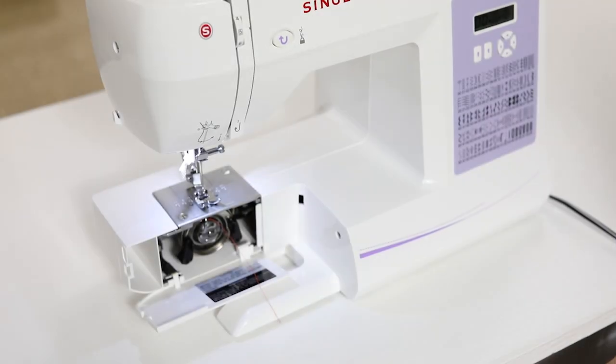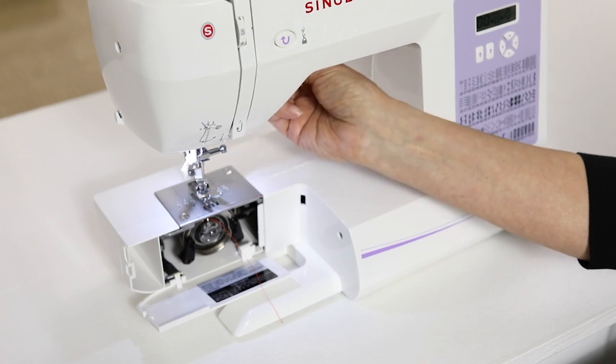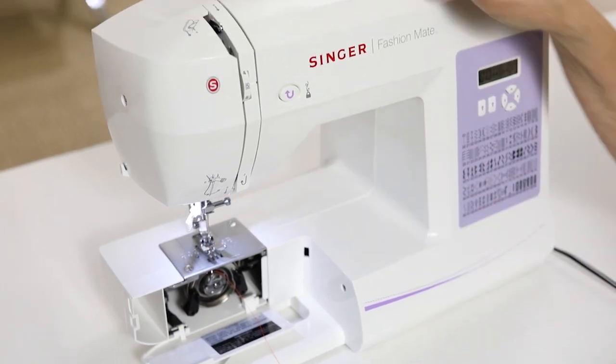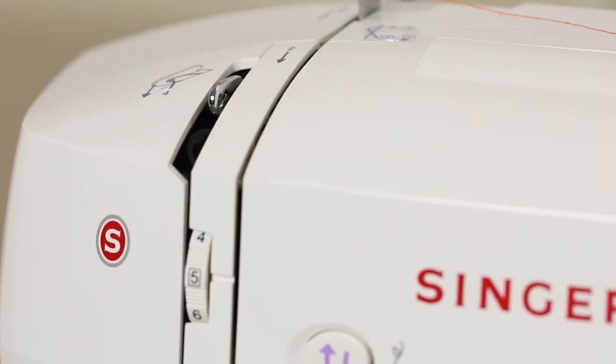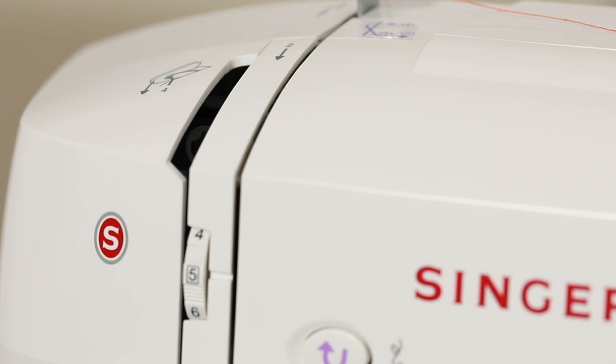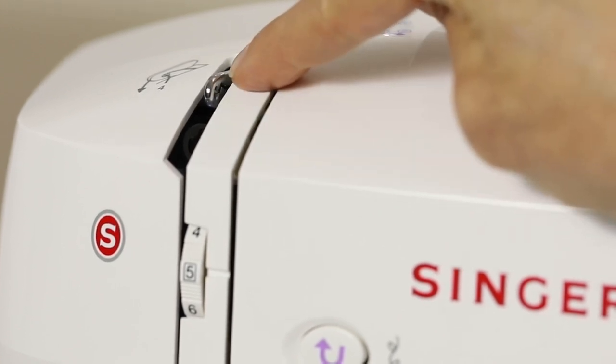To get ready to thread the top of the machine, first thing we're going to do is raise the presser foot lifter. We're also going to make sure that the thread take up lever is visible. If it isn't, turn your hand wheel toward you until you can clearly see the thread take up lever at the top of the machine here.